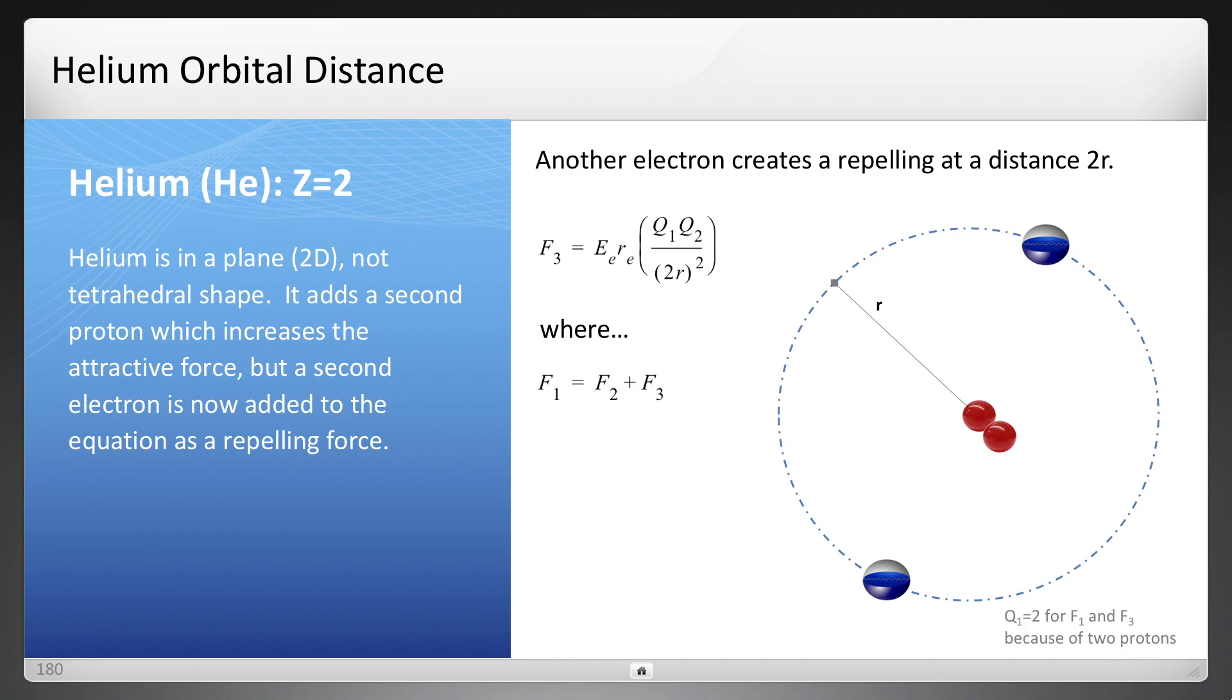Now, and because it's a repelling force, it's added to the right side of the equation, so you get f1 equals f2 plus f3. The two repelling forces is equal to that f1 attractive force. And if you solve for this, you end up with an equation that looks like that r equals 30.2 picometers for helium.